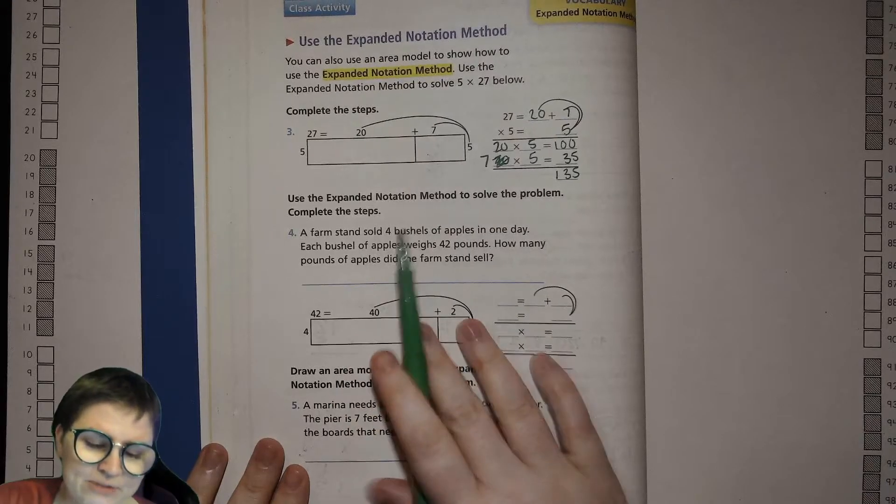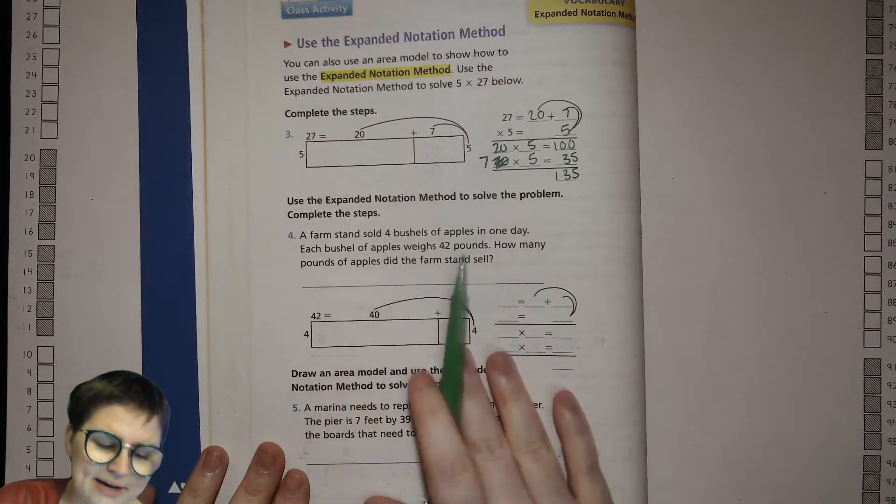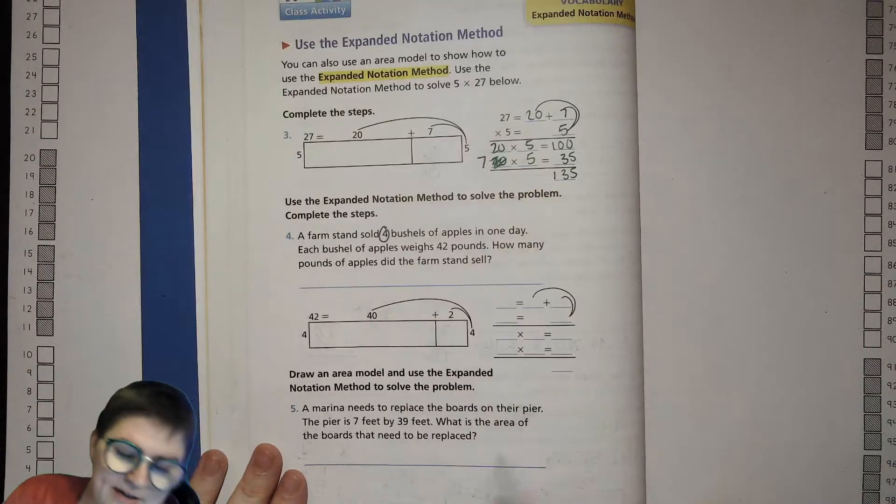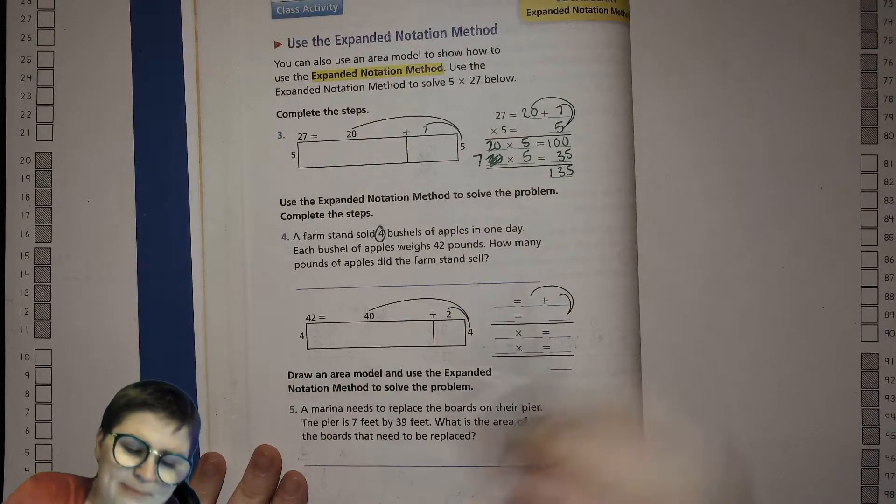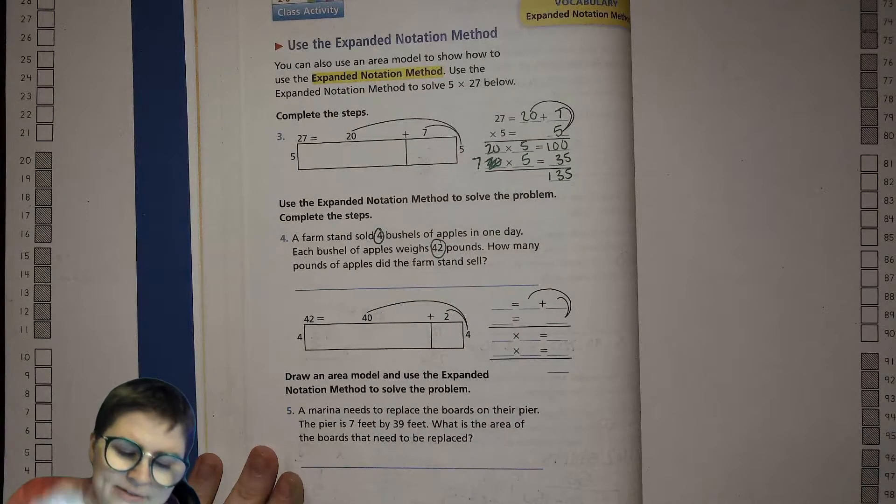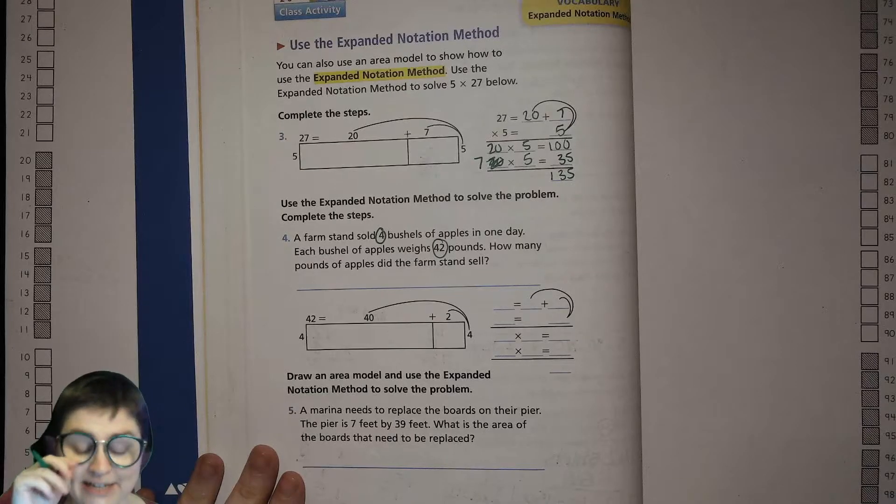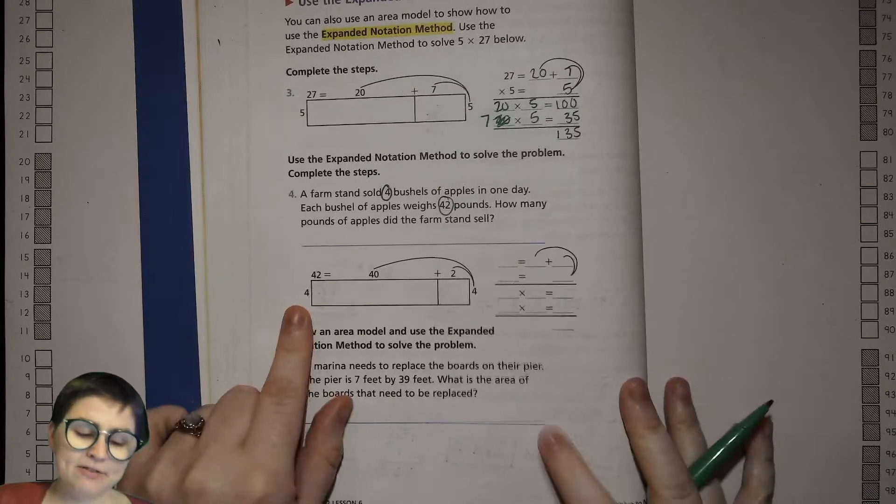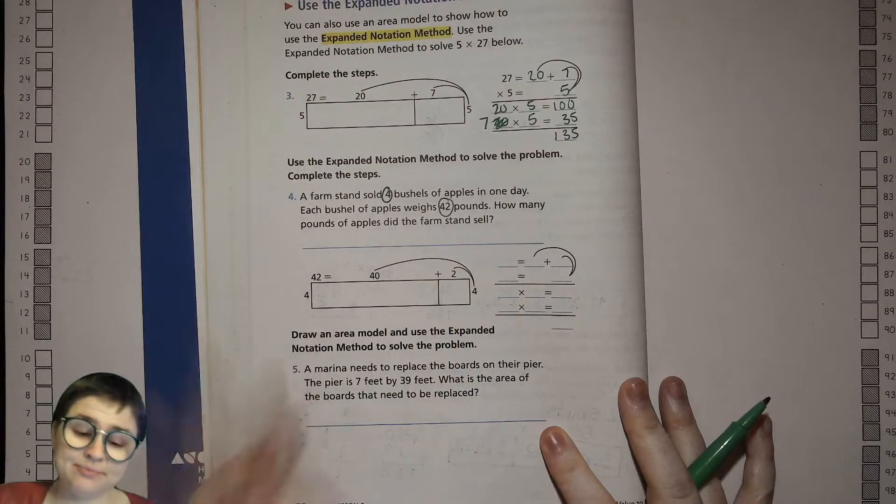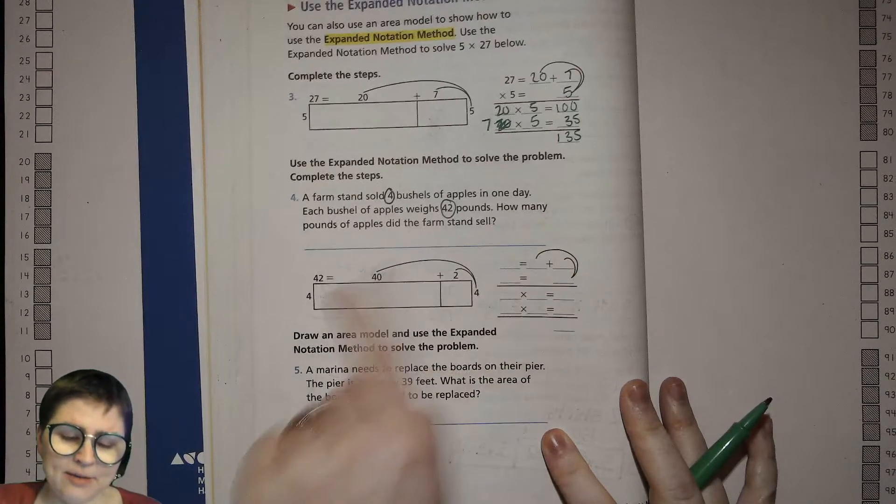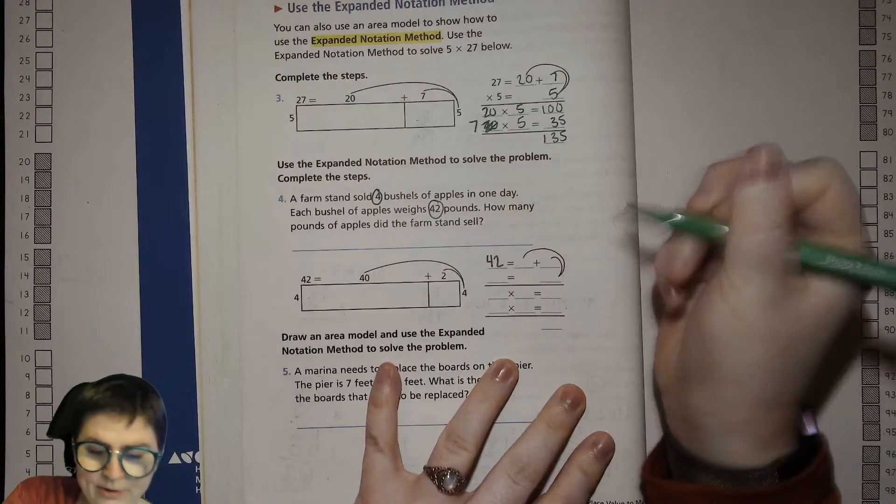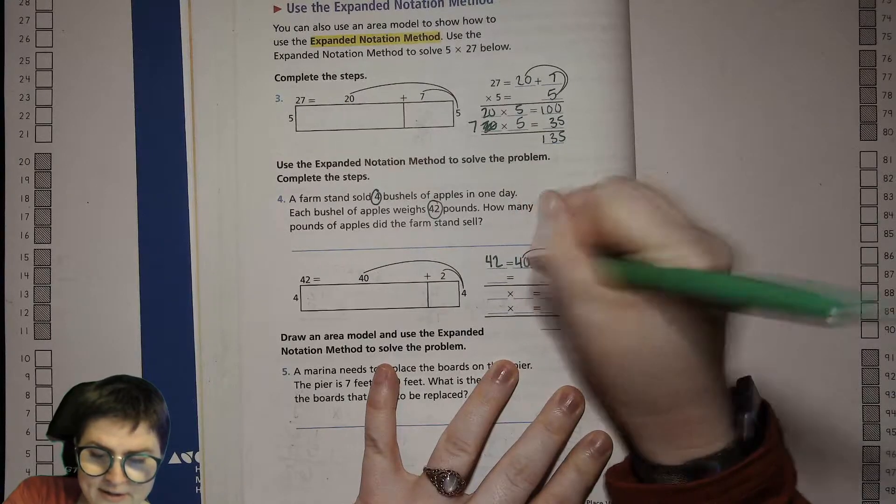Use the expanded notation method to solve the problem. A farm stand sold 4 bushels of apples in one day. Each bushel of apples weighs 42 pounds. How many pounds of apples did the farm stand sell? We have our single digit factor right here. Our double digit is broken down by place value, and we're going to write the equations off to the side. So our 42 we broke into 40 plus 2.